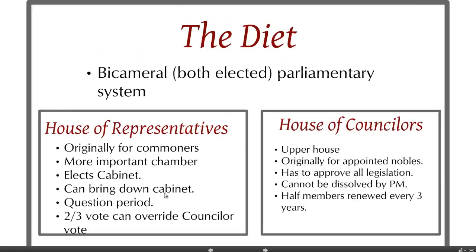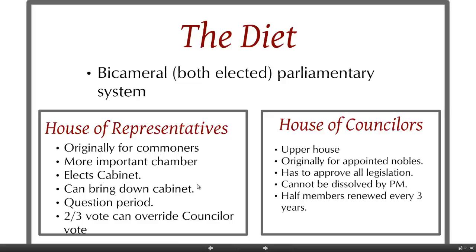Moving into the parliament, both chambers are elected by the people — unlike the House of Lords in Great Britain or the Senate in France. It's a bicameral system. The lower house is the House of Representatives, originally for commoners, much like the House of Commons in the United Kingdom. It retains primacy as the more important chamber, elects the cabinet, which is responsible to it, and can bring down the cabinet — all quite like the United Kingdom system.